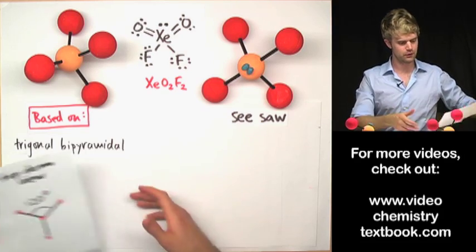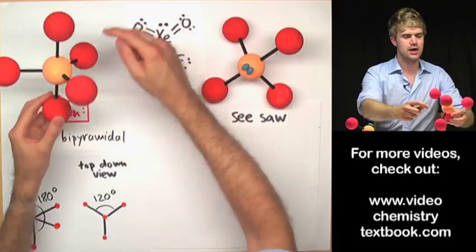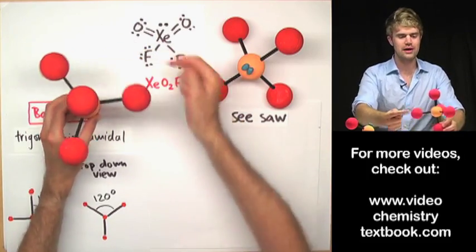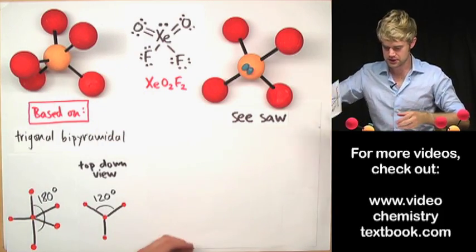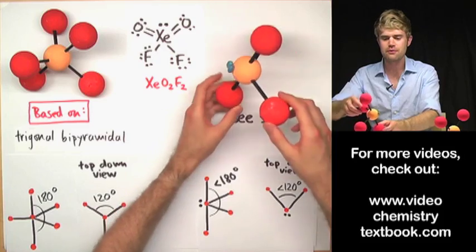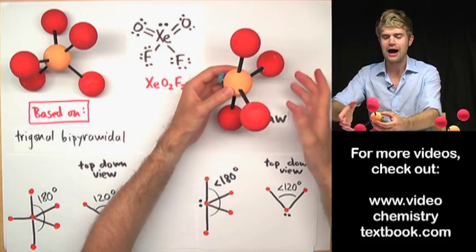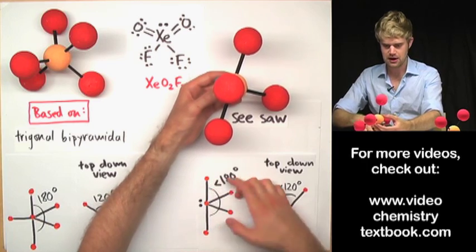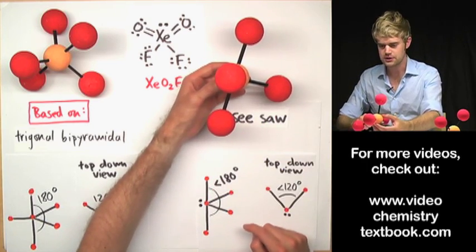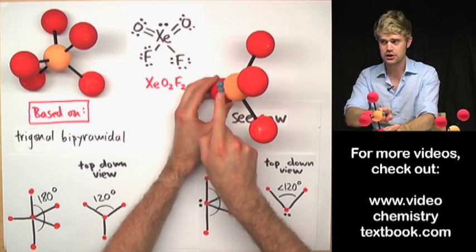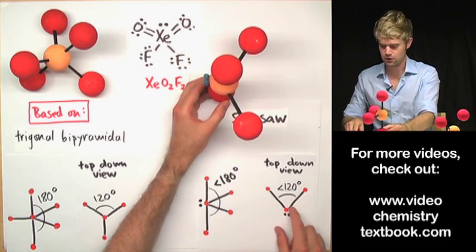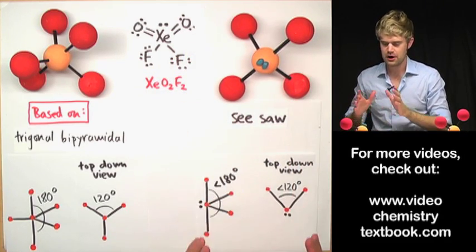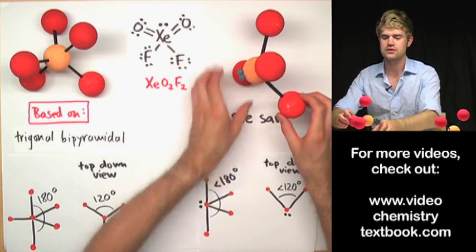Let's talk about angles. In the trigonal bipyramidal, there is a 180-degree angle between the two axial atoms, and from the top down there's 120 degrees between each of the equatorial atoms. Now in the seesaw, the unshared electron pair pushes harder against atoms because it wants more space. So the two axial atoms get pushed closer together, meaning that angle is less than 180 degrees. And from the top down, the atoms are also being pushed together, so the angle between them is less than 120 degrees.